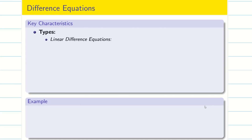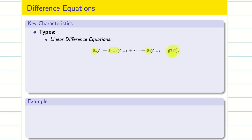There are two types of difference equations. The first is the linear difference equation. If all coefficients a_n, a_(n-1), and so on down to a_0, and g(n) are constants, then it is a linear difference equation.